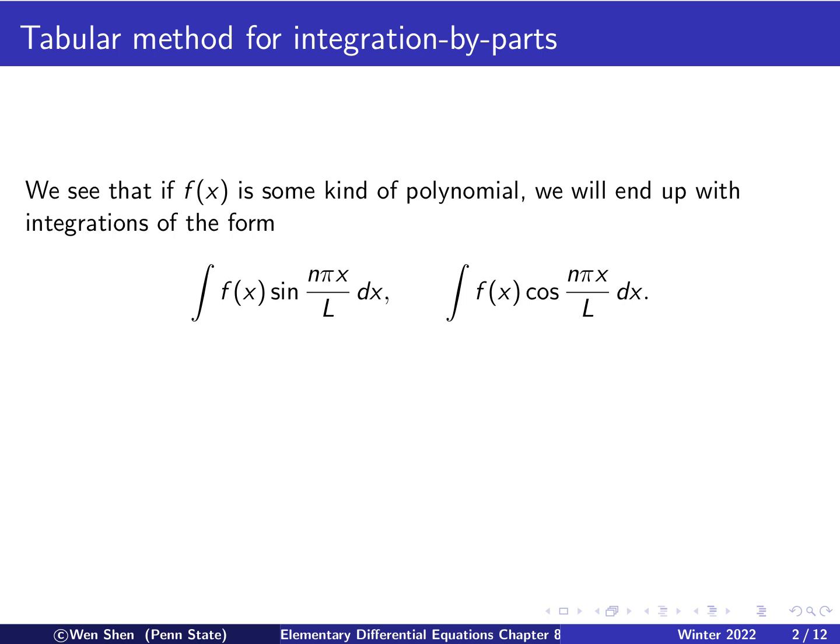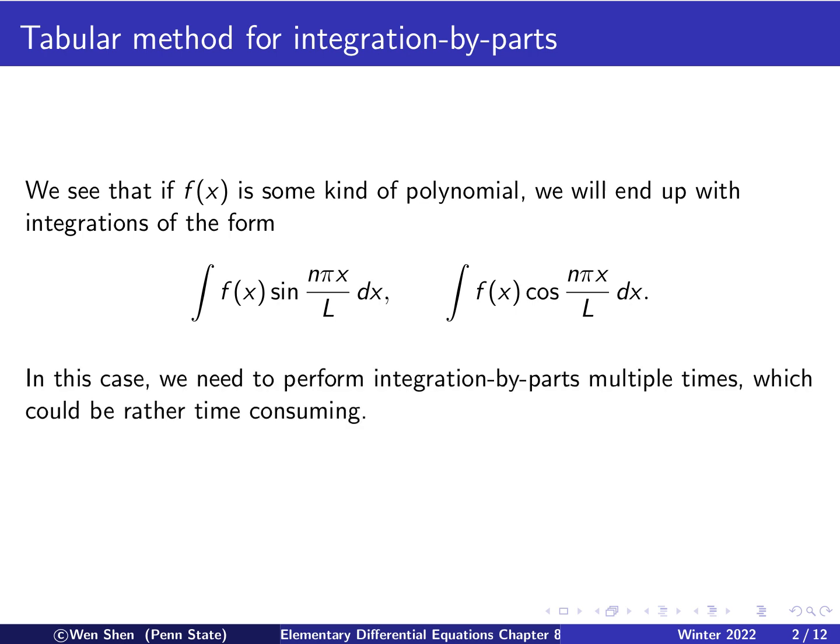We have taken a few examples of finding the Fourier series of some given function, and we see that the main part of the work is to carry out the integral. If we see that the function f(x) is some kind of a polynomial, then we will end up computing integrals of the form polynomial times sine and polynomial times cosine. These are not so easily computed — the general standard algorithm is to do integration by parts, possibly multiple times depending on the polynomial, and it would be rather time-consuming.